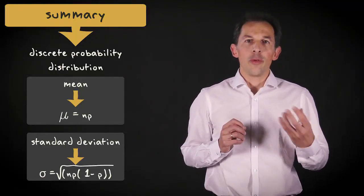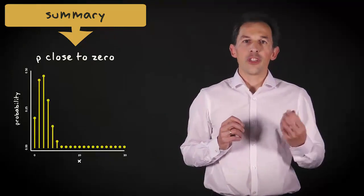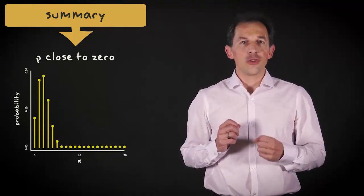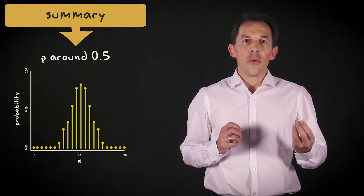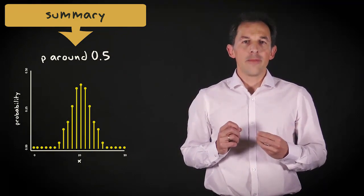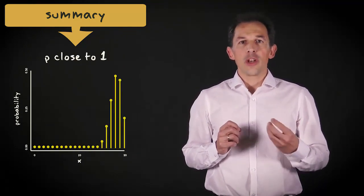The shape of the binomial distribution varies from right skewed when the value of p is close to 0, to symmetric when p is around 0.5, and left skewed when p is close to 1.